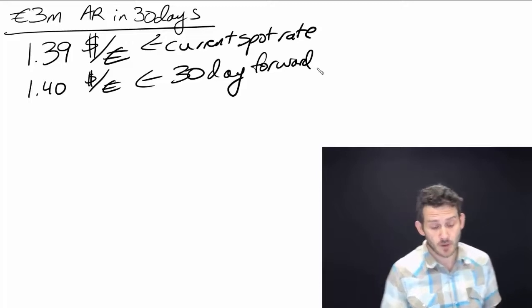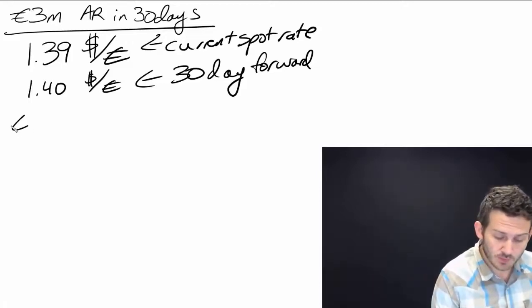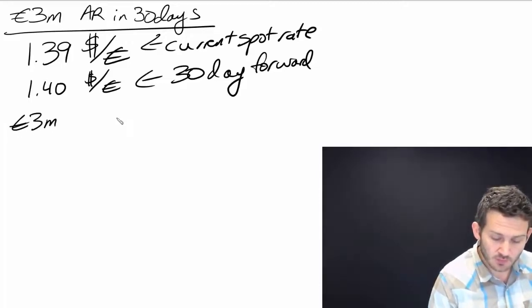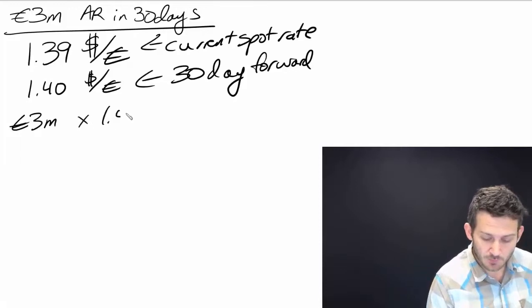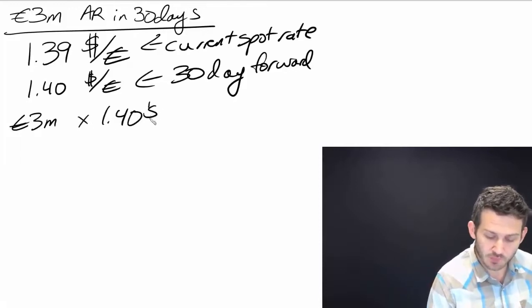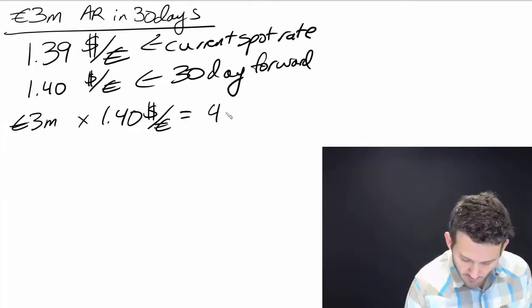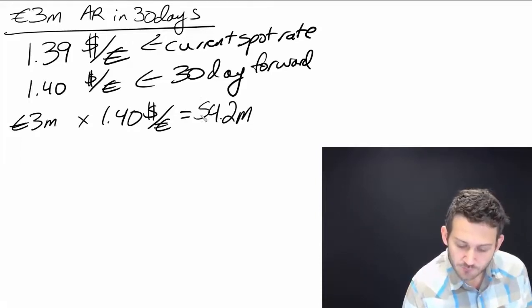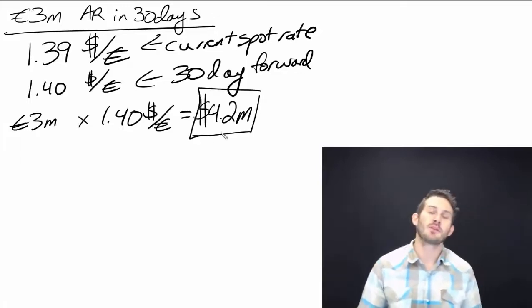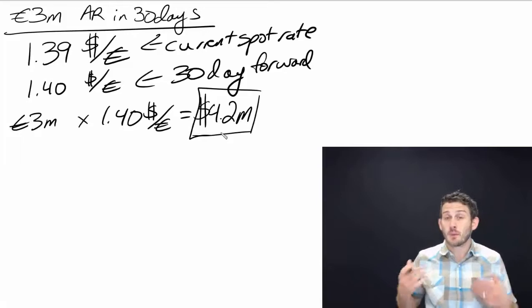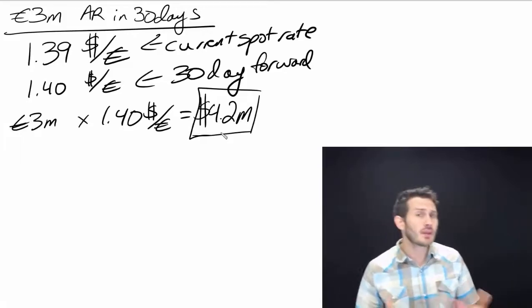So what I'm going to do is take my 3 million euros, multiply it by my exchange rate - the 1.40 dollars per euro - and that tells me that I will have 4.2 million dollars coming in. So I have an account receivable of essentially 4.2 million dollars, and that's what my payment is going to be.